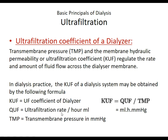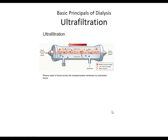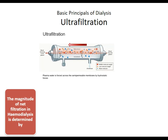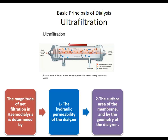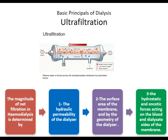The transmembrane pressure and the membrane hydraulic permeability — or ultrafiltration coefficient (KUF) — regulate the rate of fluid movement across the dialysis membrane. KUF is the ultrafiltration coefficient of a dialyzer, measured as ultrafiltration rate per transmembrane pressure in millimeters of mercury. The magnitude of filtration in hemodialysis is determined by the hydraulic permeability of the dialyzer, the surface area of the membrane, and the geometry of the dialyzer — the narrower fiber has more ultrafiltration capacity. Hydrostatic and oncotic forces acting on the blood limit ultrafiltration. Increased hydraulic permeability and increased membrane surface area increase ultrafiltration, while increased hematocrit and protein content of the blood limit ultrafiltration.